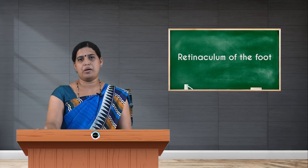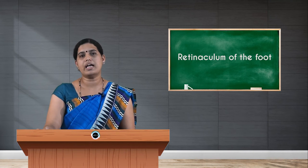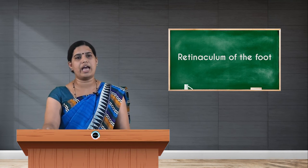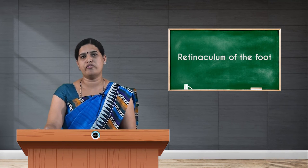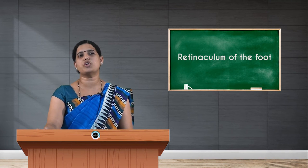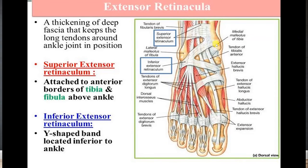The Y-shaped inferior extensor retinaculum has a stem that is attached laterally to the calcaneus bone. As it reaches the dorsum of the foot, it splits into an upper band and a lower band. The upper band attaches to the medial malleolus of tibia, whereas the lower band merges with the deep fascia of the sole.